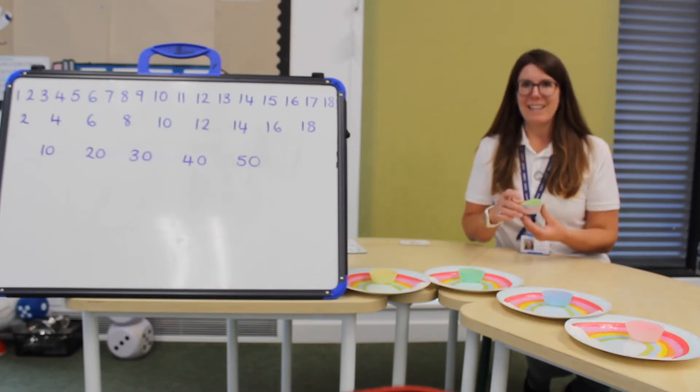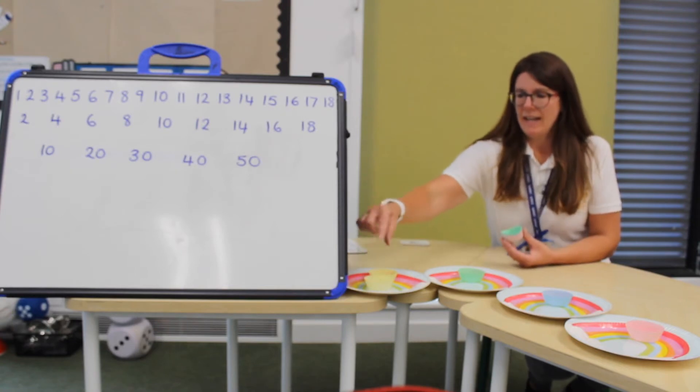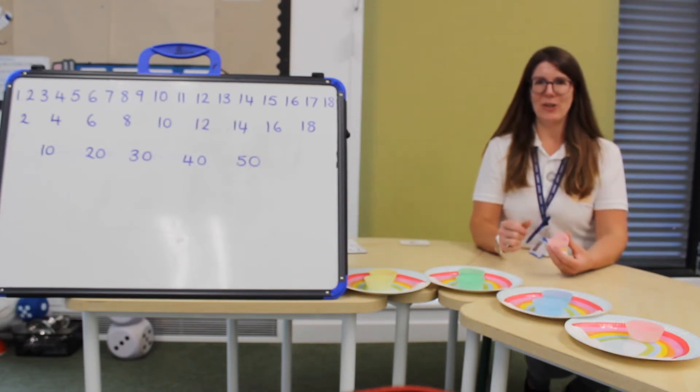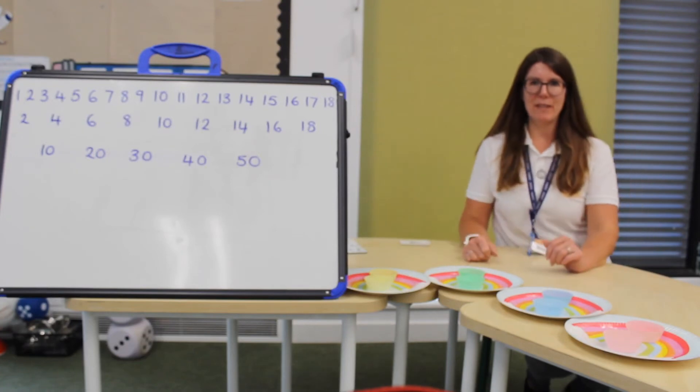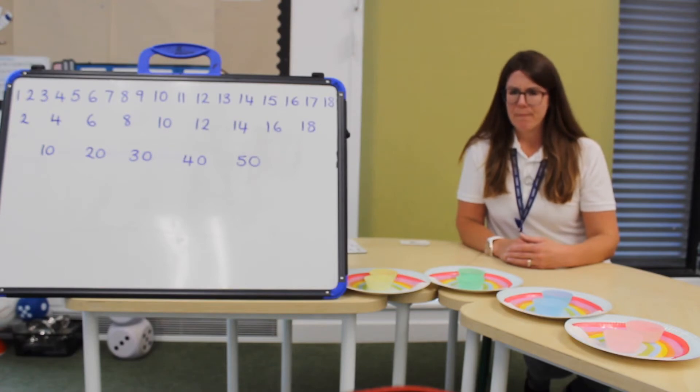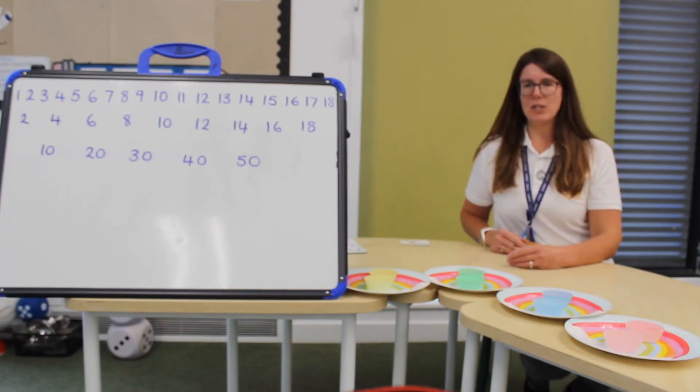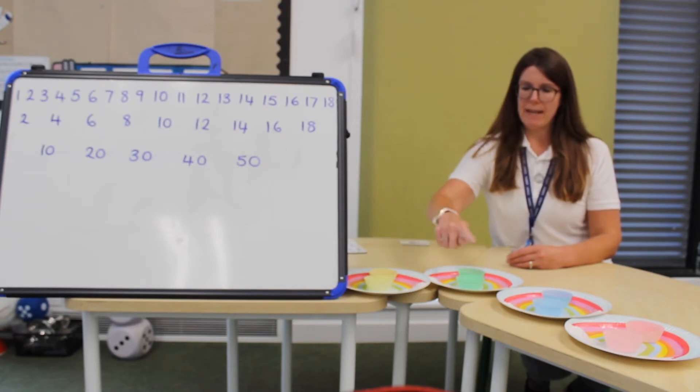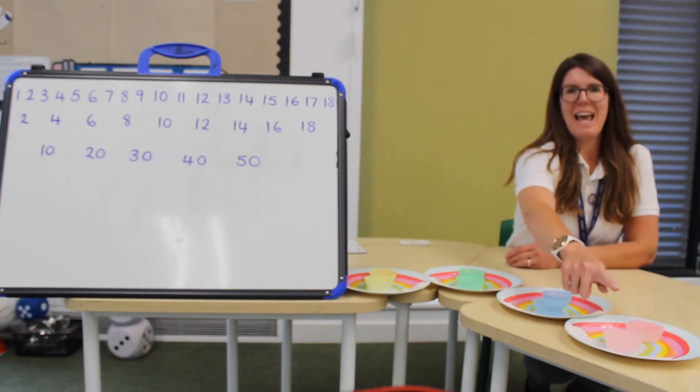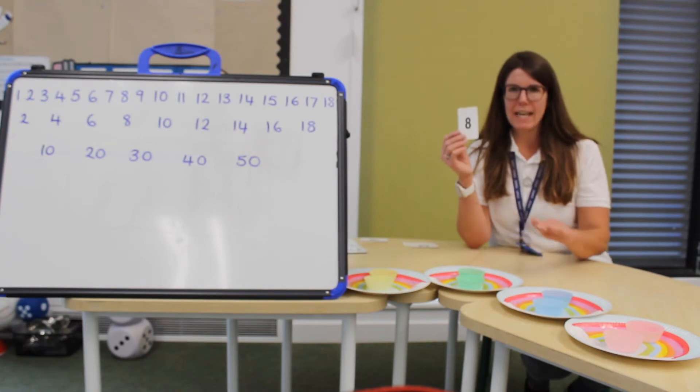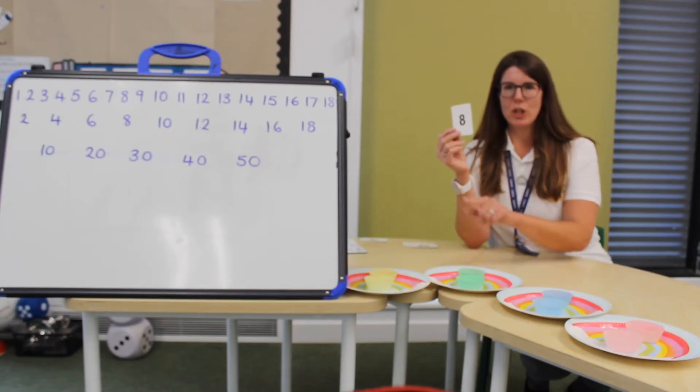But I still have some more cupcakes. So let's keep going. Now I have two for this person. Two for this person. And two for this person. And two for this person. I have equally shared out our cupcakes. There are two on each plate. Let's count how many there are all together. One, two, three, four, five, six, seven, eight cupcakes. I have eight cakes shared equally between four people. And they have two each.